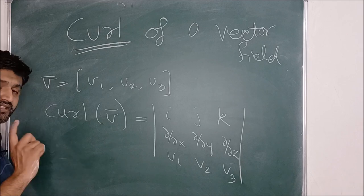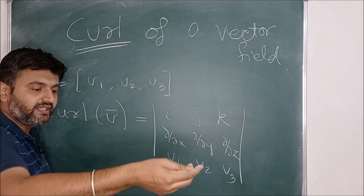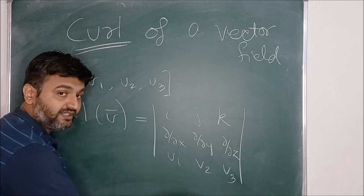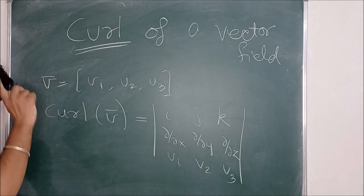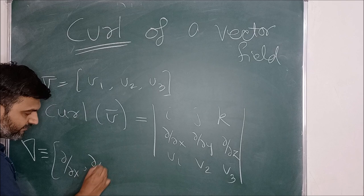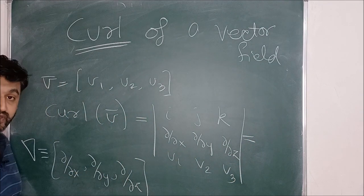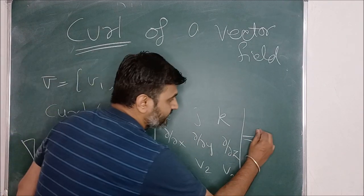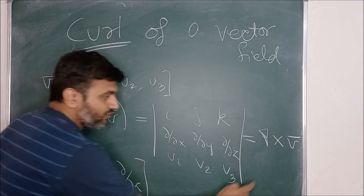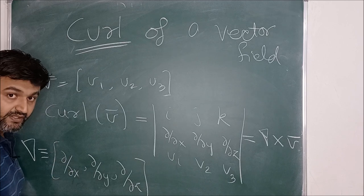You can connect this with the cross product of two vectors. If A bar is (a1, a2, a3) and B bar is (b1, b2, b3), then A cross B is the determinant with rows i, j, k; a1, a2, a3; b1, b2, b3. From this, if you recall the nabla operator — whose components are the partial derivatives — then curl of a vector field is nothing but the cross product of the nabla vector with the vector field. So nabla cross V is another notation for curl of a vector field.